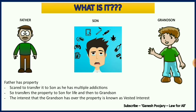So many things are involved. First, there is a transfer of property. Second, there is a prior interest created. Before the property goes to the actual person with vested interest — the grandson — there is a prior interest created. Between the father and the grandson, there is a son who holds the prior interest. Also remember, vested interest cannot be created for an unborn person.